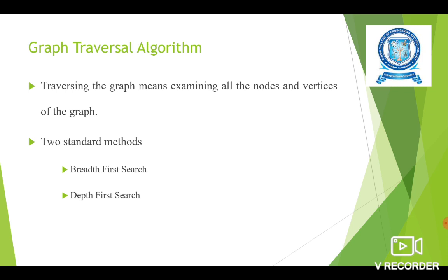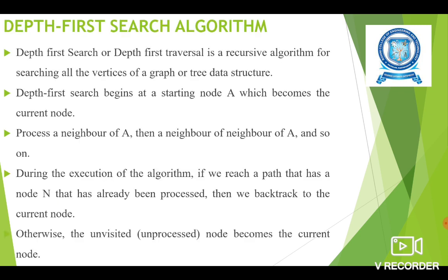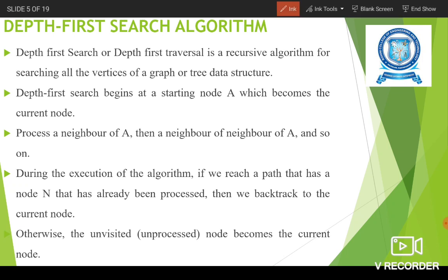What is graph traversal algorithm? Traversing is nothing but visiting all the nodes. We have two standard methods for graph traversal: breadth first search and depth first search. Depth first search is a recursive algorithm used to search all the vertices of a graph or all the vertices of a tree data structure.